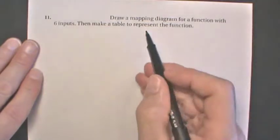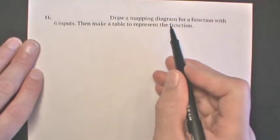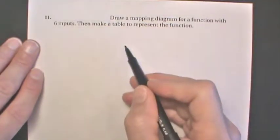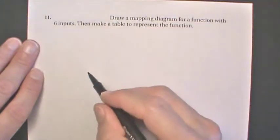Problem 11, we need to draw a mapping diagram for a function with six inputs, and then also represent as a table.